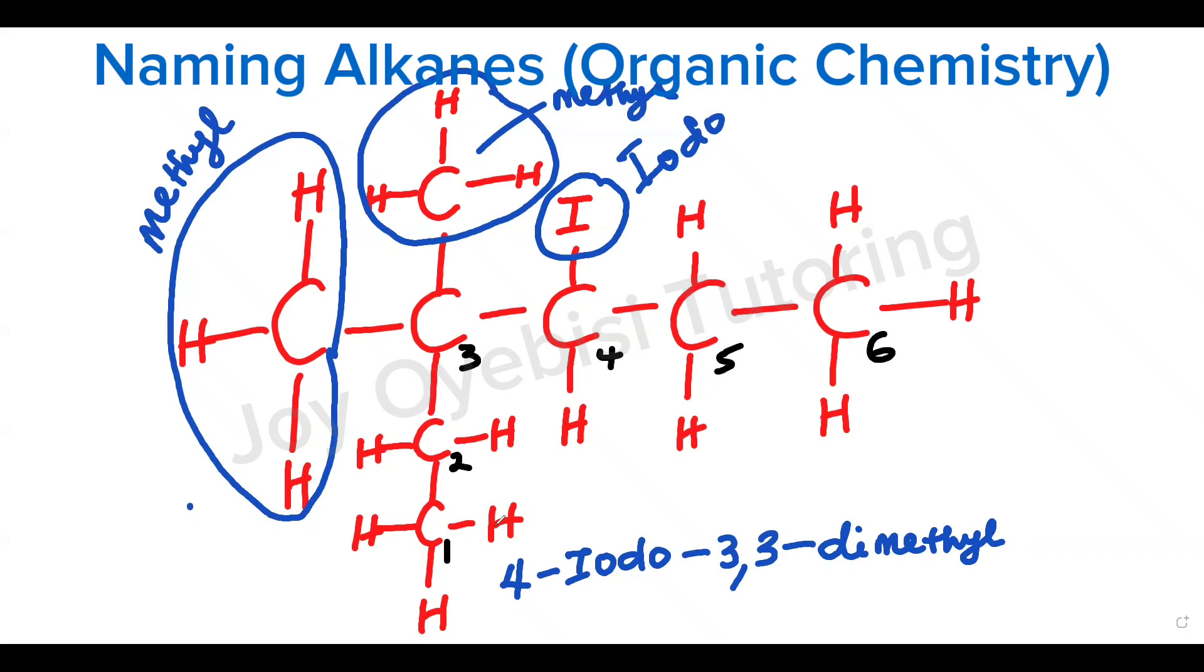So we move on from there. The last part of this name would then be the longest continuous carbon chain. And that is hex for six. So the prefix for six is hex. And the suffix is going to be ane. This is because this compound is a carbon single carbon bond, which is an alkane. So that will end with A-N-E. And that is how you name this compound, 4-iodo-3,3-dimethylhexane.